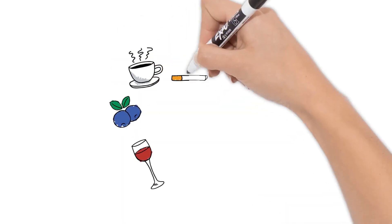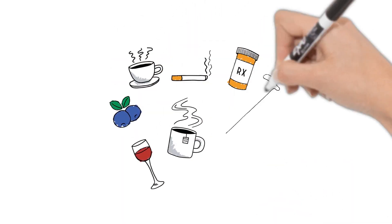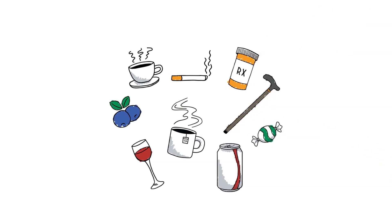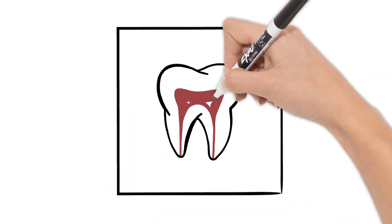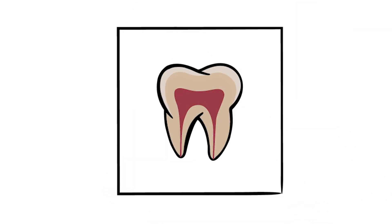Enamel can be discolored over time by outside sources like coffee, tea, tobacco, and other foods and beverages. Also, as we age, our enamel becomes more translucent, causing more dentin to show through, which makes the overall appearance of the tooth look darker.